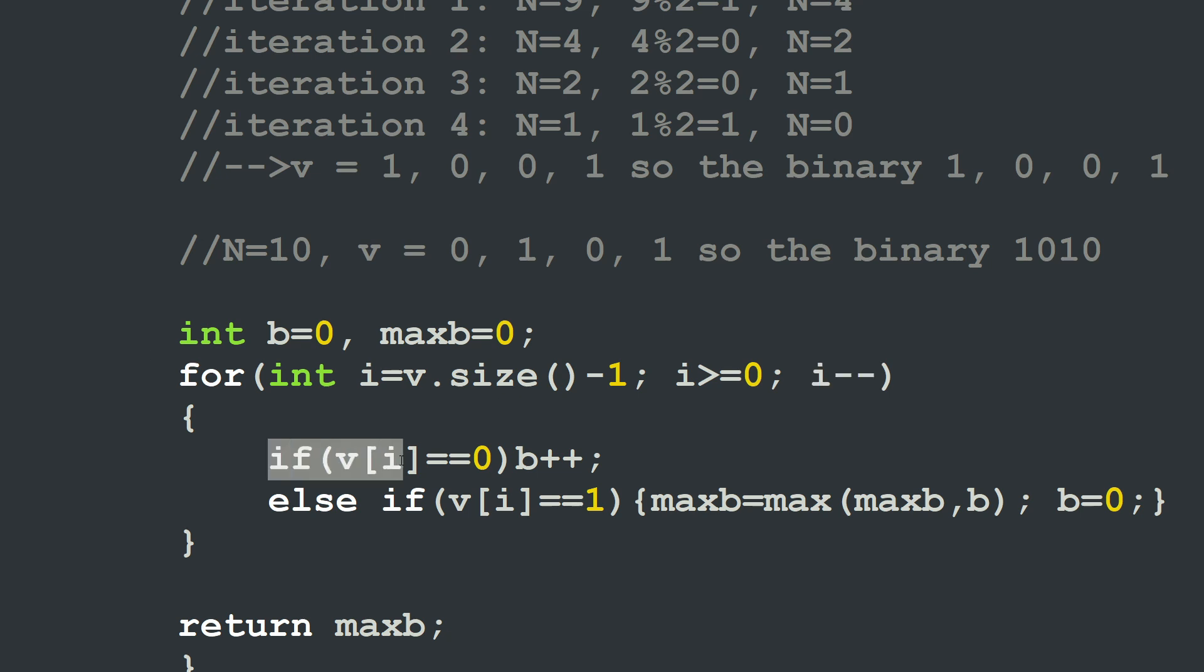Every time I will read a 0, I will increment my counter b. So my integer b here is the 0 counter. If v[i] is equal to 0, I increment b, my 0 counter.